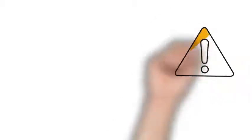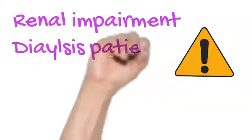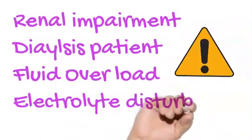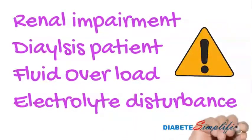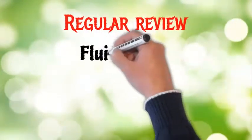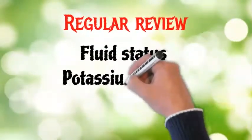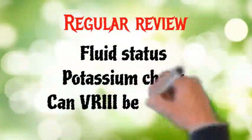Remember that patients at high risk of electrolyte disturbance — such as those with renal impairment, dialysis patients, and those at risk of fluid overload — require special attention. This includes patients with liver failure, heart failure, or pregnancy, as they can be at high risk when started on variable rate IV insulin. All patients require regular review of fluid status and electrolytes, especially potassium, and always ask yourself whether the variable rate IV insulin can be stopped.